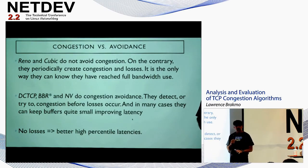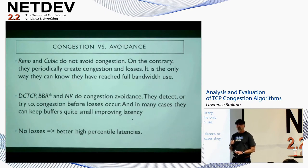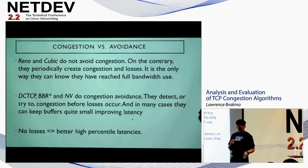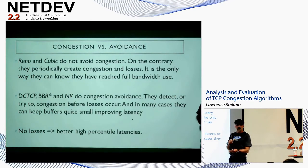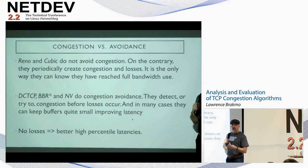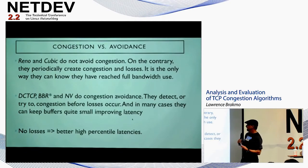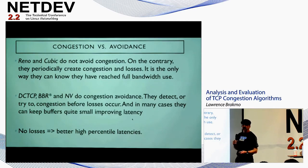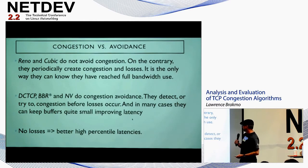Let me start by differentiating between congestion control and congestion avoidance. Congestion control — like what Reno and Cubic do — does not avoid congestion. On the contrary, they periodically create congestion to produce losses to figure out that they have reached all of the available bandwidth. As a result of those losses, typically the high-percentile latencies for small transfers are high. DCTCP, BBR, and NV do congestion avoidance — they try to detect the queue buildup before it leads to losses, in order to prevent losses. BBR has an asterisk because under some conditions it is very happy with losses. Obviously no losses means better high-percentile latencies.